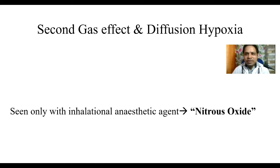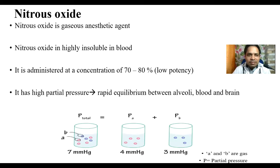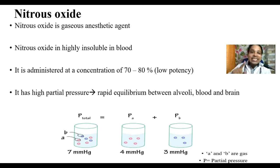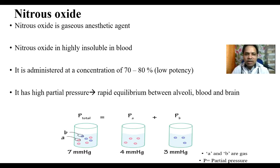We'll start with the second gas effect. Nitrous oxide is a gaseous anesthetic agent. It is highly insoluble in blood — please make a note of this. It is administered at a concentration of 70 to 80 percent; that's why it has low potency, as it is given in high concentration. It has high partial pressure, meaning it acquires rapid equilibrium between alveoli, blood, and brain.